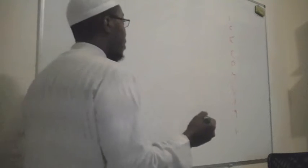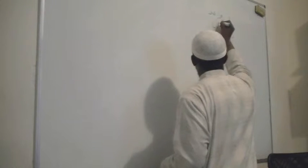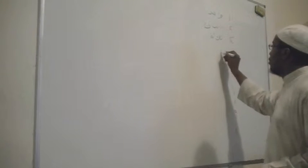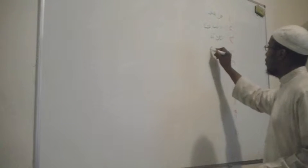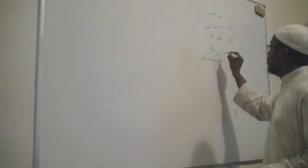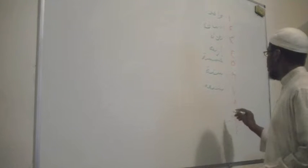Let's go — what's the first one? واحد. اثنان. ثلاثة. أربعة. خمسة. ستة. سبعة. ثمانية.